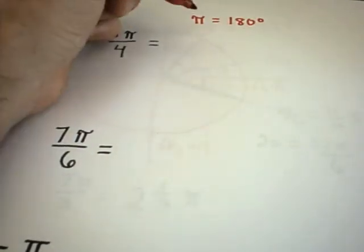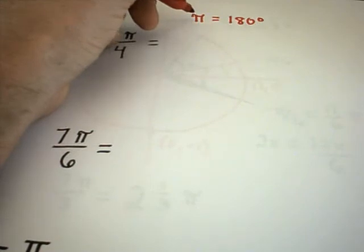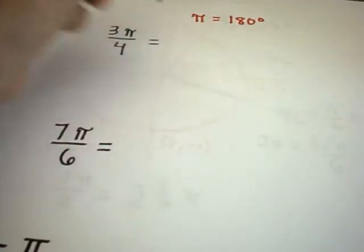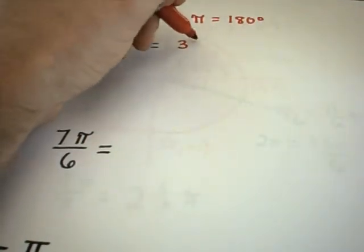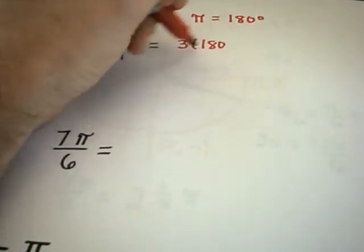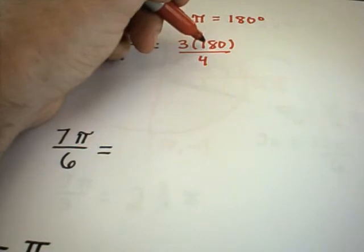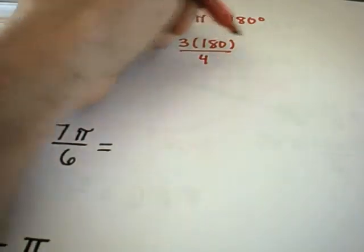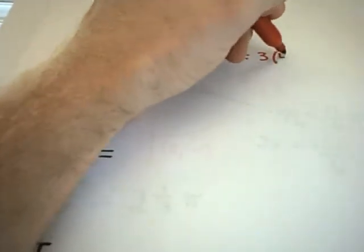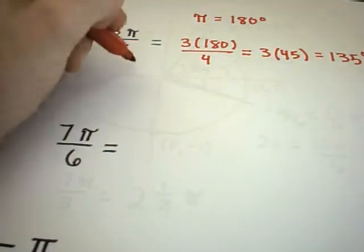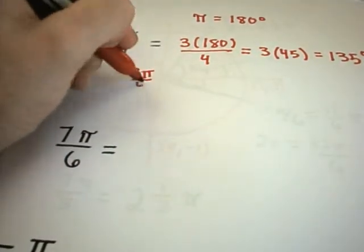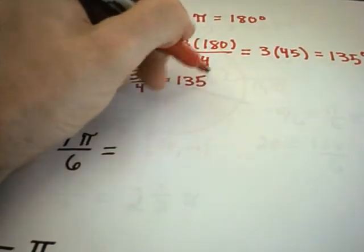So we start off with our pi equals 180 degrees. And here we don't have to really divide or do anything. It says, well, we want 3 pi over 4 on the left side. So simply we'll take that formula and multiply both sides by 3 over 4. So on the right side, I'll get 3 times 180 over 4. Well, let's see, 4 goes into 180 how many times? I believe 45 times. And if you take 3 times 45, that'll give you 135 degrees. So it says 3 pi over 4 is equivalent to 135 degrees.